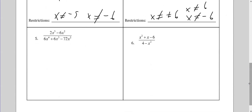Number 5 — you cannot do any guess and check factoring, but you can take out a GCF. I'm going to take out a 2 from the 2 and 6, and x squared from the x cubed and x squared. 2 divided by 2 is 1, x cubed divided by x squared is x, and negative 6 divided by 2 is negative 3. The x squareds cancel. On the bottom, I'm going to take out a 6x squared.